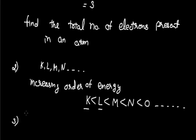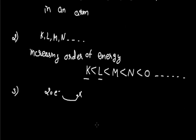The third rule is knowing the maximum number of electrons any shell can contain. For example, for an atom with 20 electrons, all 20 cannot go to K shell. The maximum capacity of any shell can be calculated by the formula 2N², where 2 is a constant and N is the main quantum number, or simply the shell number.